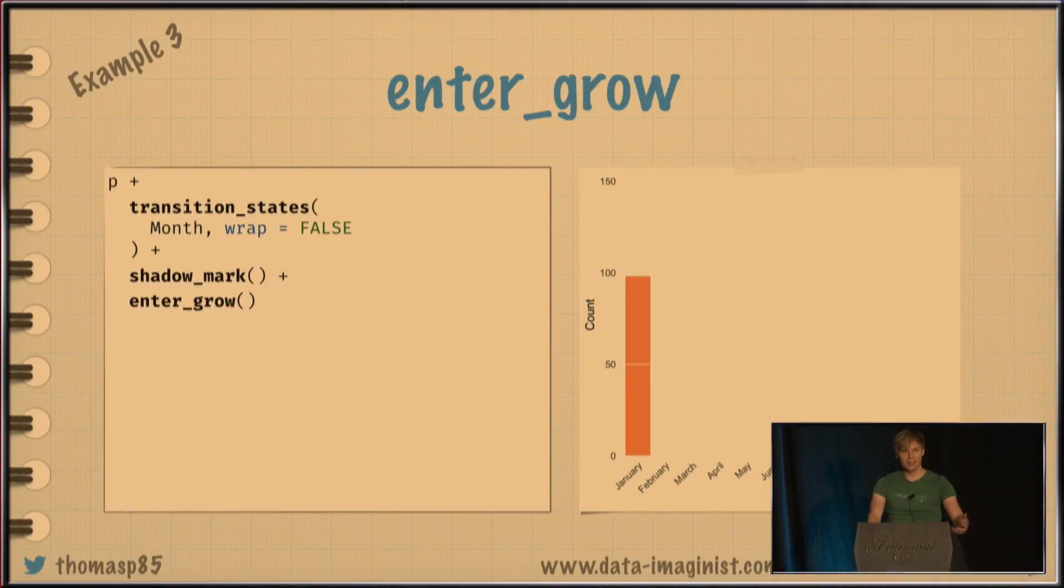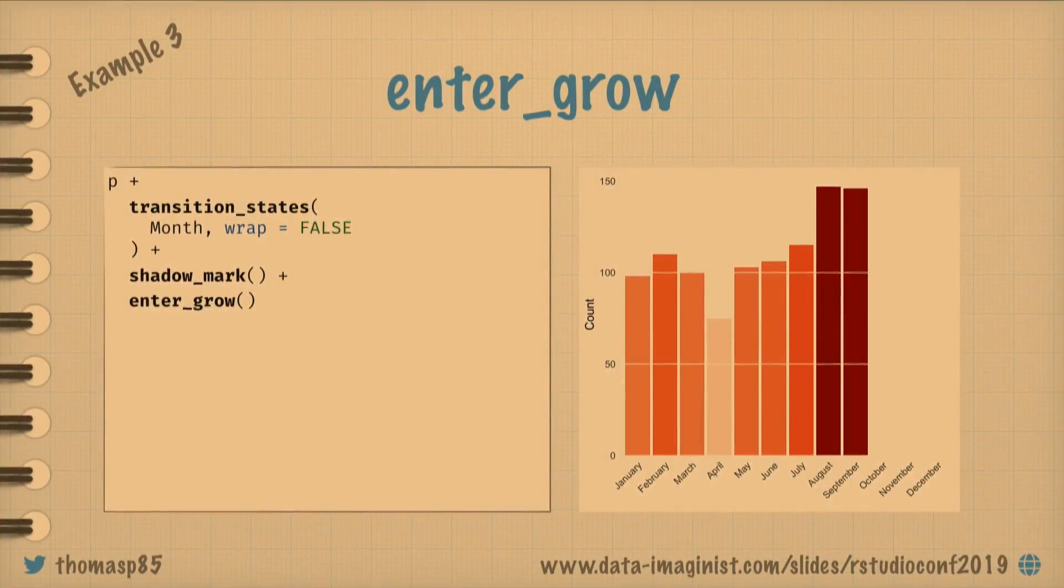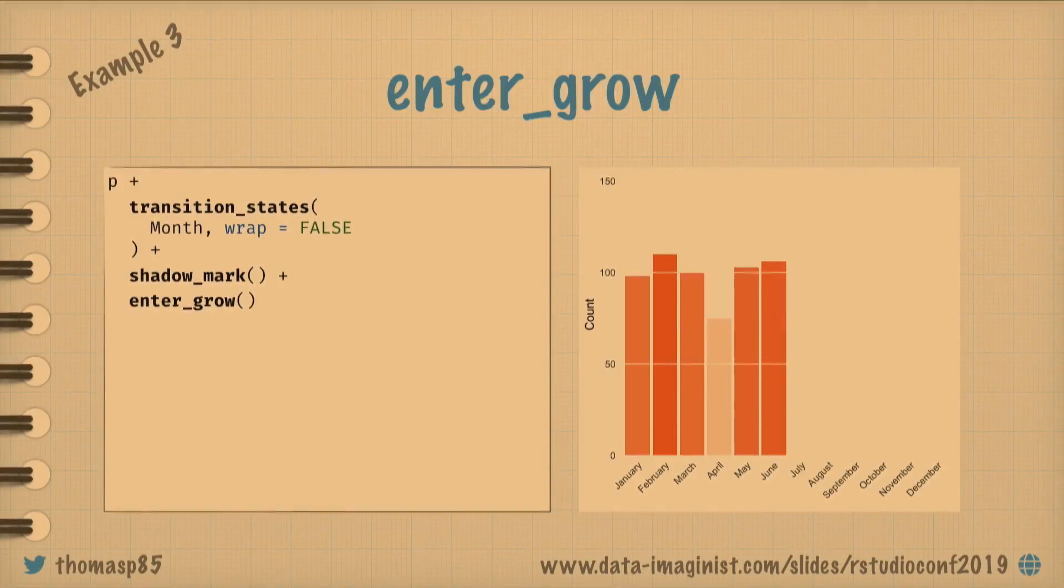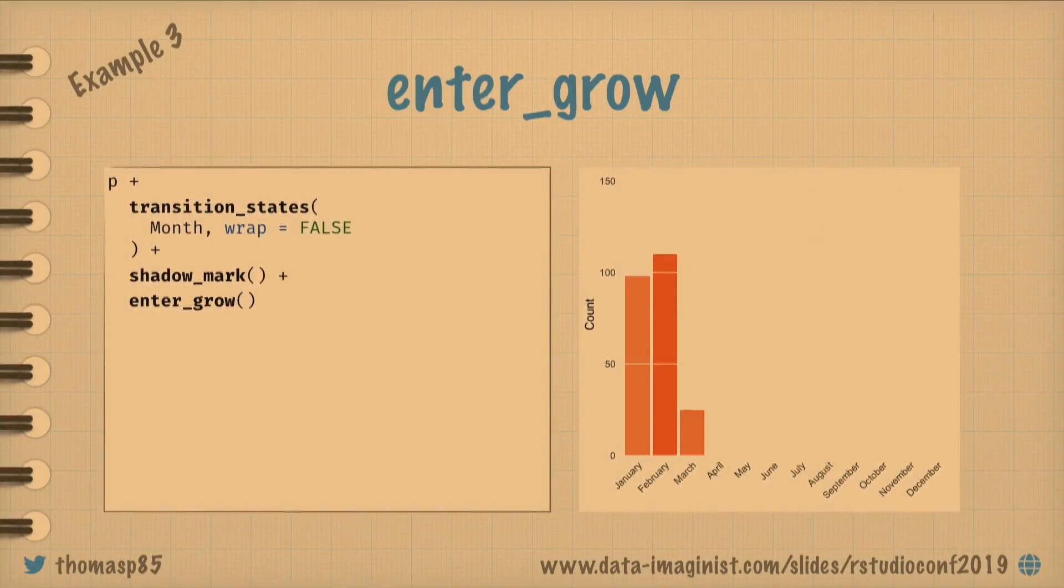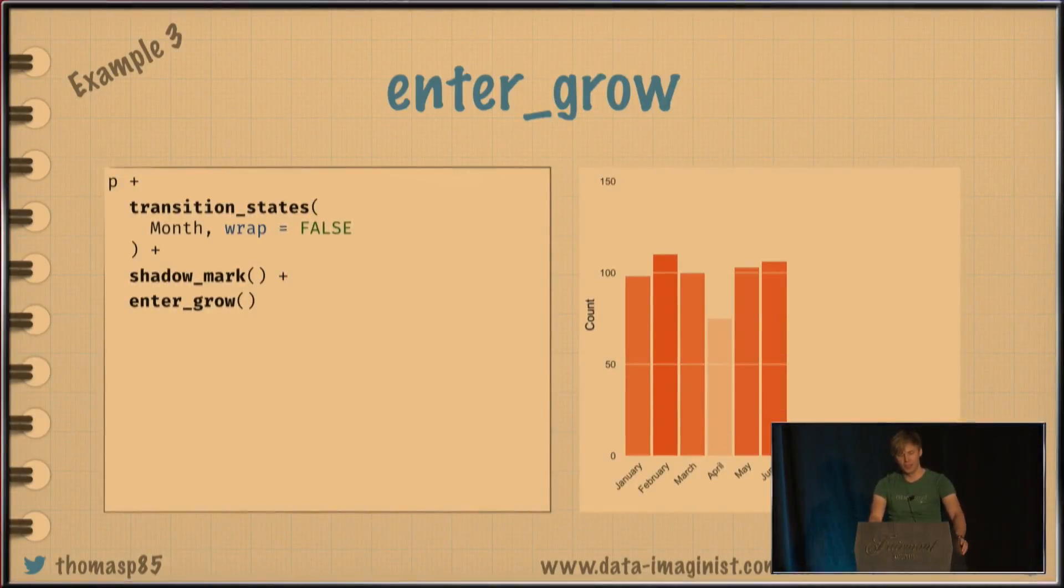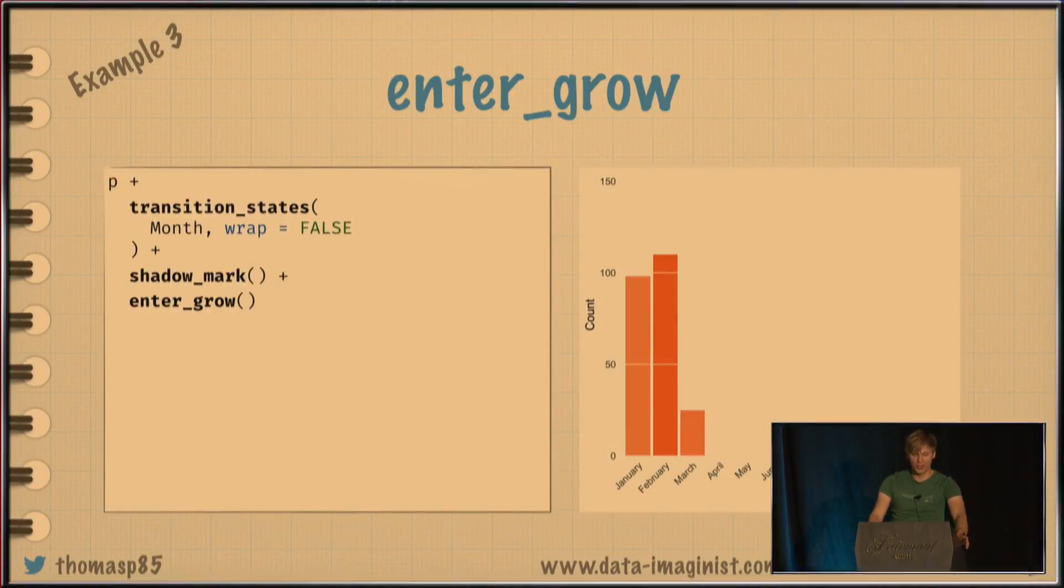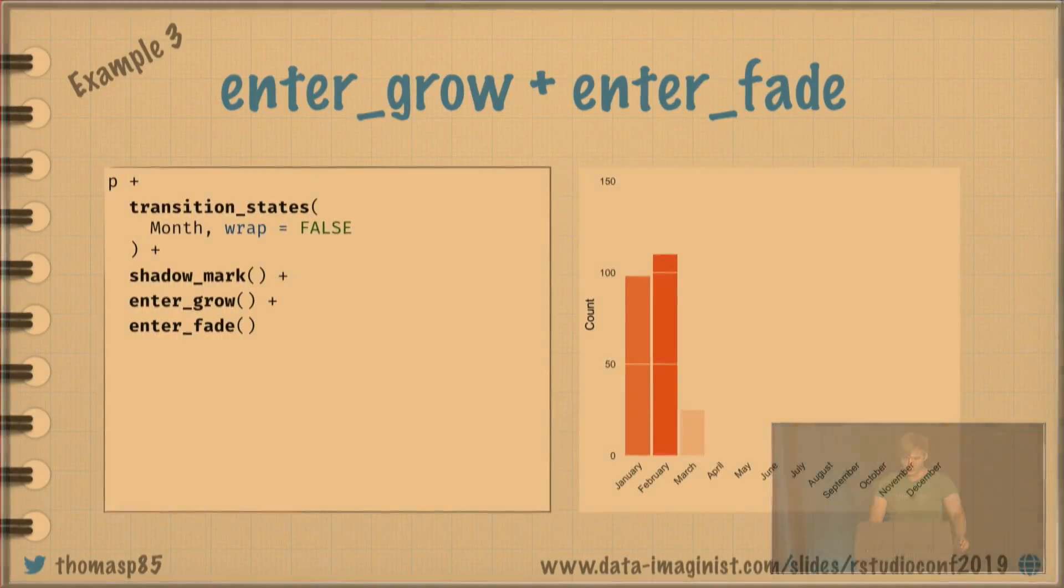And what we can do about this is a new concept that I haven't really talked about before, something called entering and exit modifications. So here we are adding something called enter_grow, and this will simply just say, when something new pops up, let it grow. I'm not going to sing anything now, don't worry. So you can actually, you can add flourish like this, and it's actually, it allows the animation to appear much more smoothly. And gganimate comes with a number of these different entering and exit transitions, or entering and exit modifications. And you can combine them, so you can actually enter_grow and enter_fade, and it will do both of these at the same time. So you can do quite a lot with the building stuff. Like so.